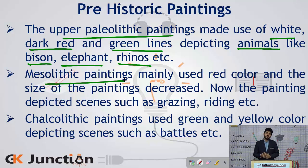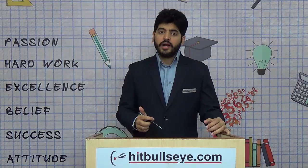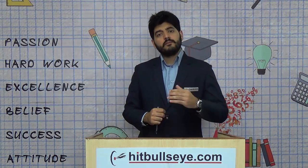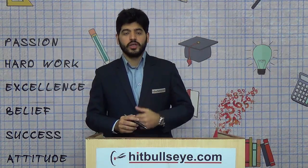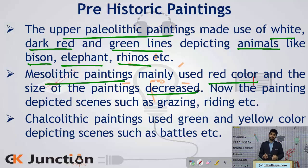Coming to the paintings of Mesolithic times, mainly red colour was used, as against the white or other colours used in the Paleolithic period. The size of the paintings also decreased compared to the very large upper Paleolithic paintings. The themes of Mesolithic paintings included grazing or riding and others.